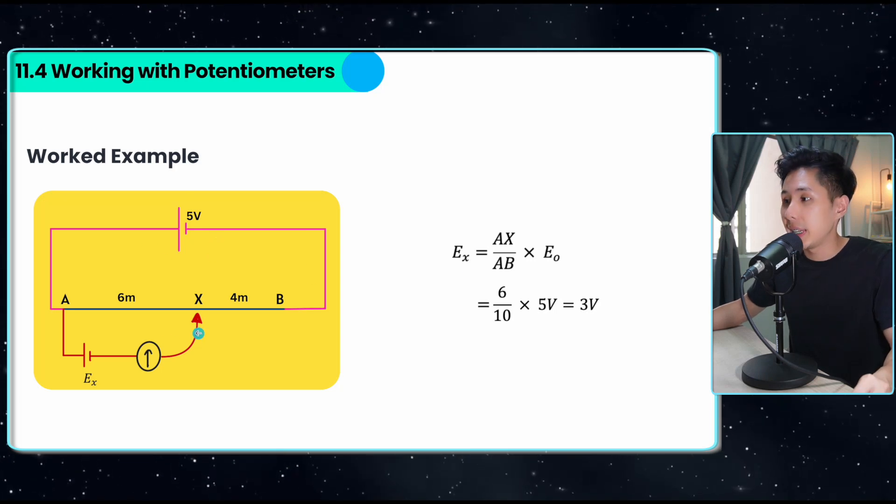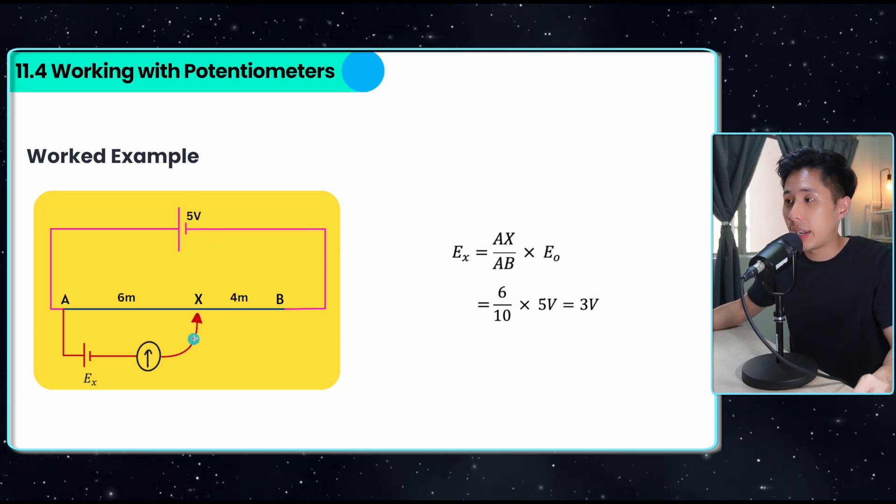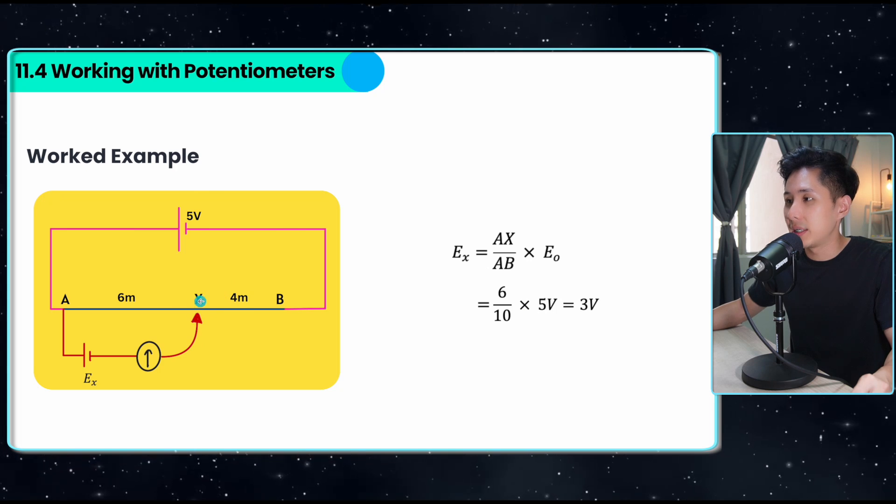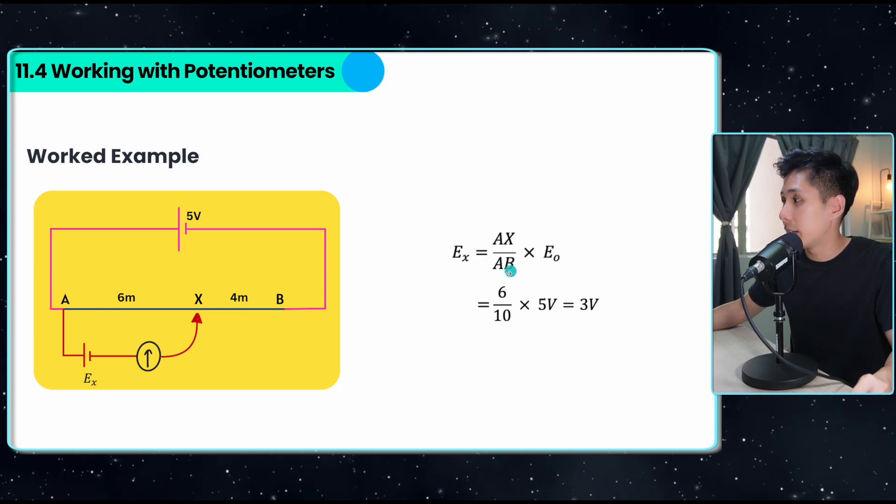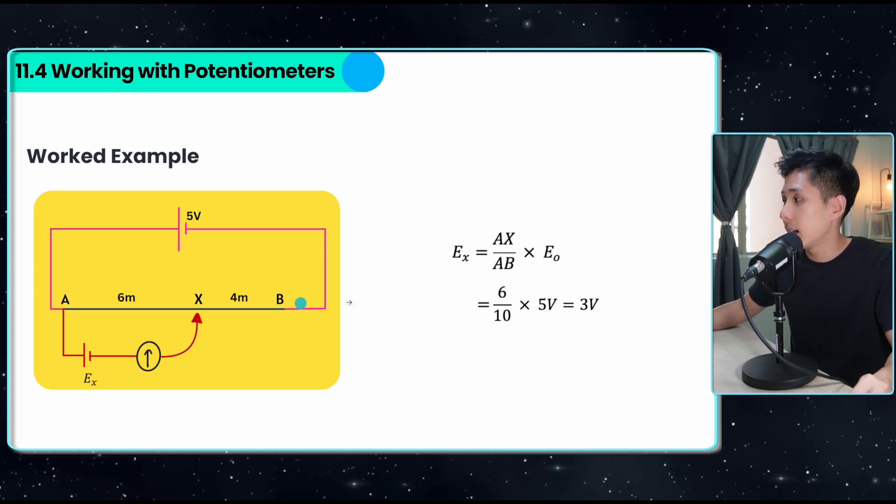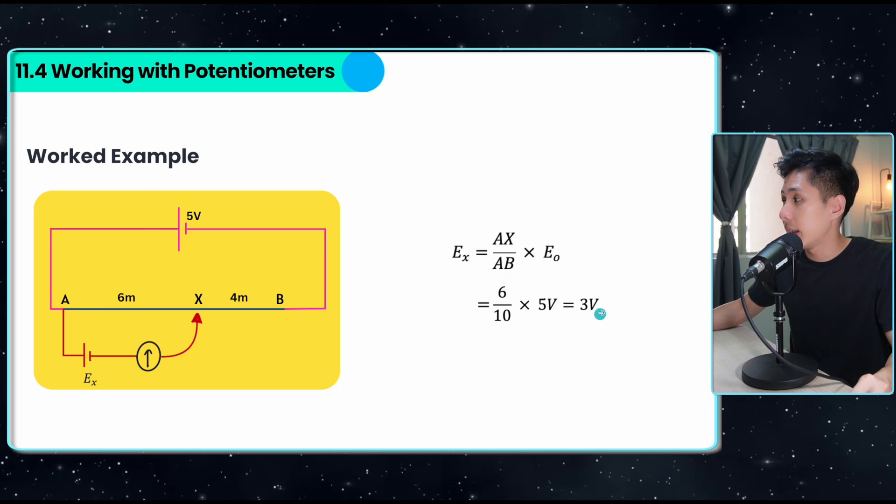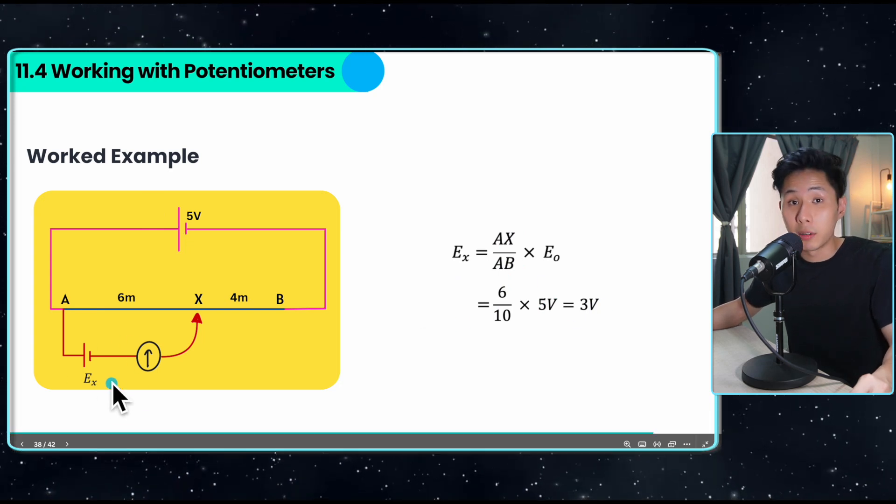Now here's a worked example. Say the null condition is achieved when I put the jockey at the 6-meter mark. This is why I can put the value of 6 here, divided by 10, which is the total length, multiplied by the input voltage. That will give me the EMF of this cell, which equals 2 volts.